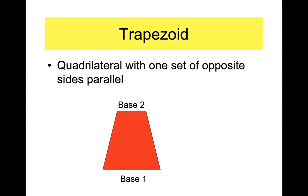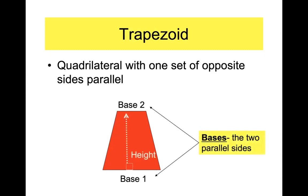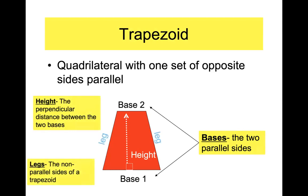The two sides that are parallel we call the bases — it doesn't matter which one is base one or base two, they're just the two parallel sides. The distance between the two bases is defined as the height, and remember that distance is always measured perpendicularly. The other two sides are called the legs — there's no leg one or leg two, they're just called legs.